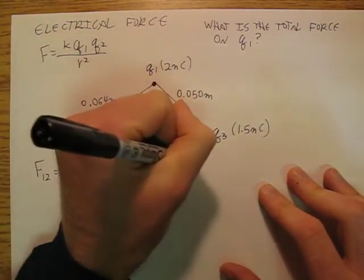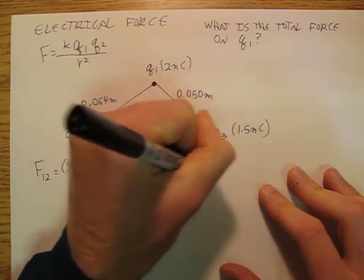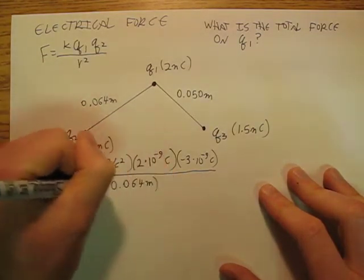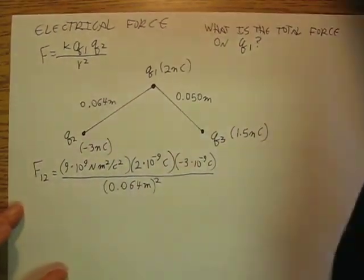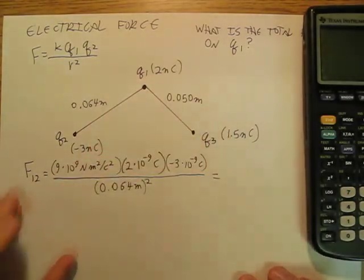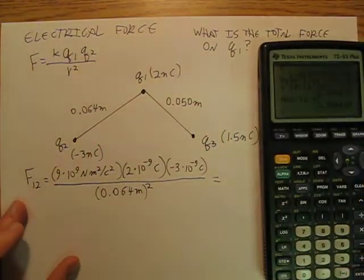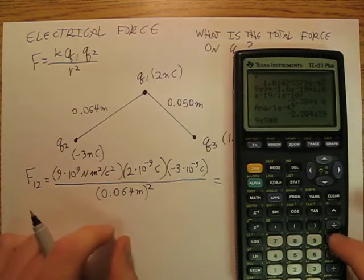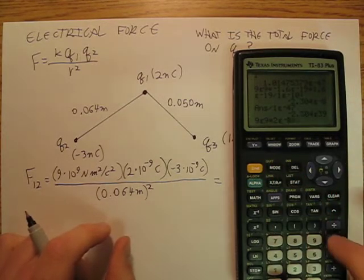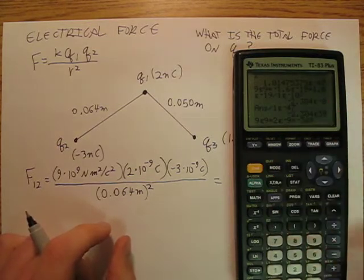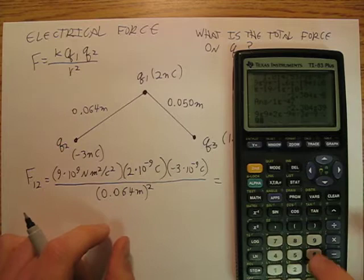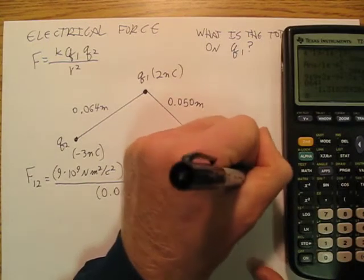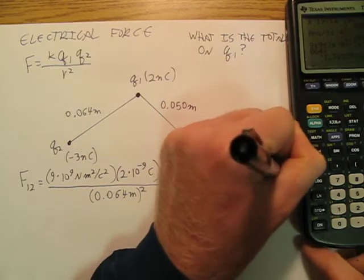And then Q2 is negative three times 10 to the negative 9th coulombs. They're separated by a distance of 0.064 meters, and I've got to square that. So F12 is going to be 9 EE 9 times 2 EE negative 9 times negative 3, divided by 0.064 squared. And I get negative 1.32 times 10 to the negative 5th newtons.